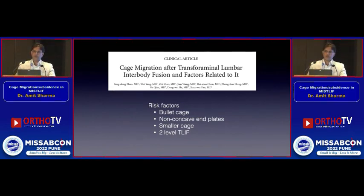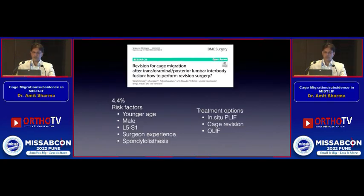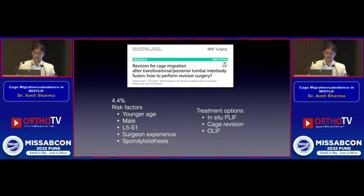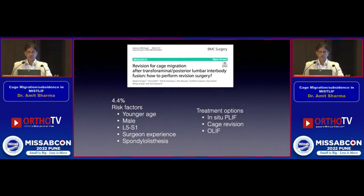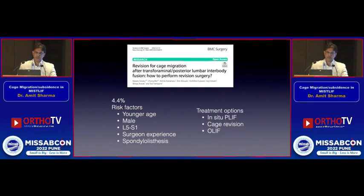Looking at the literature, risk factors include: bullet-shaped cages back out more than banana-shaped cages; linear endplates back out more than biconcave endplates; smaller cages back out more often; two-level TLIF increases the risk. Reported incidence ranges from 1.7% to around 6%, but most commonly cited is about 4.4% — roughly 1 in 20 cages may back out.